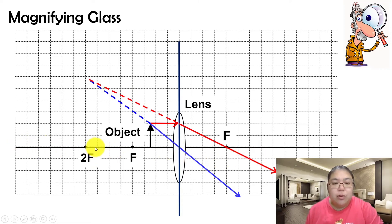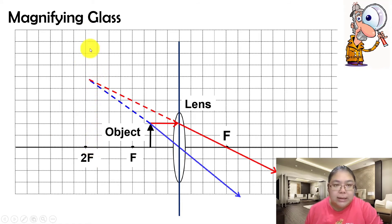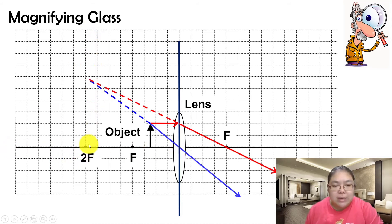We need to draw the final image starting from the horizontal line. Start from the horizontal line and draw the arrow upward. Don't start from the wrong position — it must start from the horizontal line. Then extend the arrow going up to show the image.